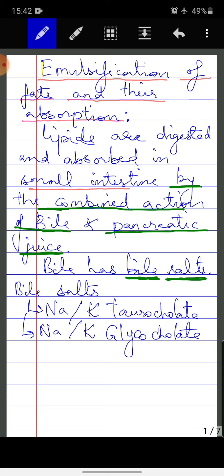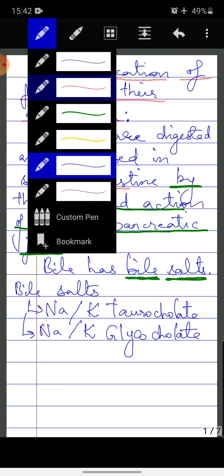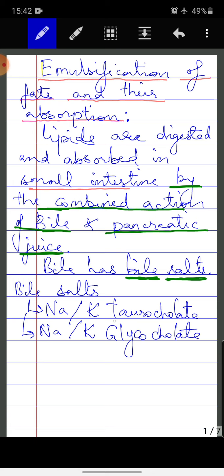Sodium or potassium taurocholate, sodium or potassium glycocholate, sodium or potassium taurocholate and sodium or potassium glycocholate. How these are formed? This salt is how they become.